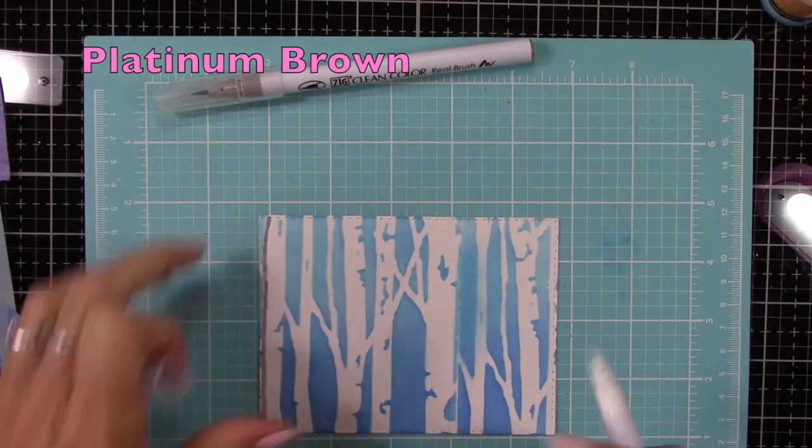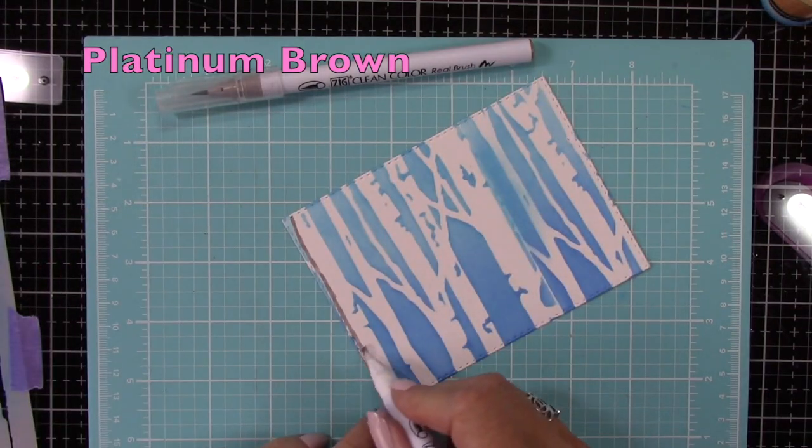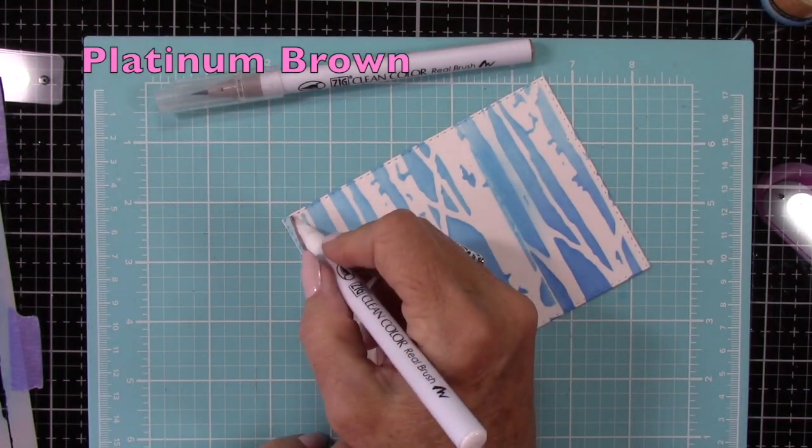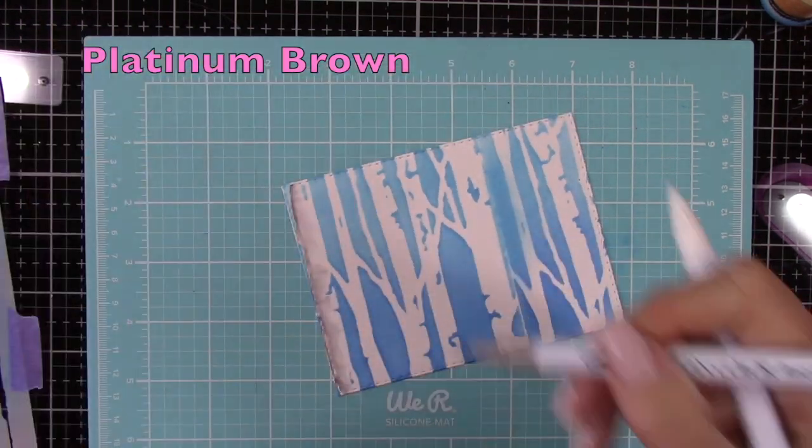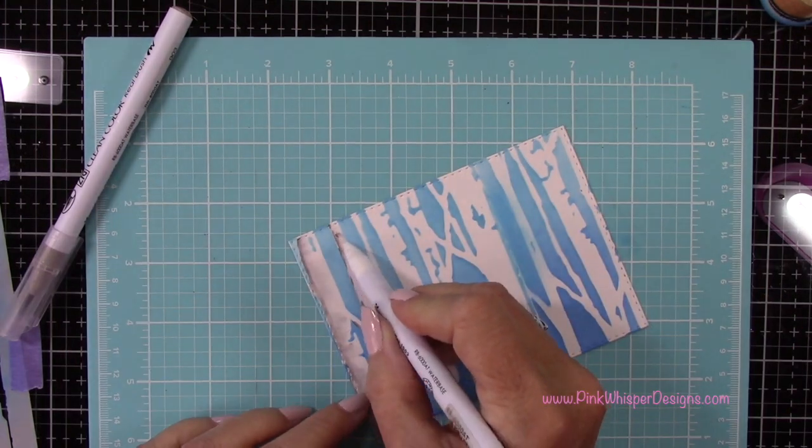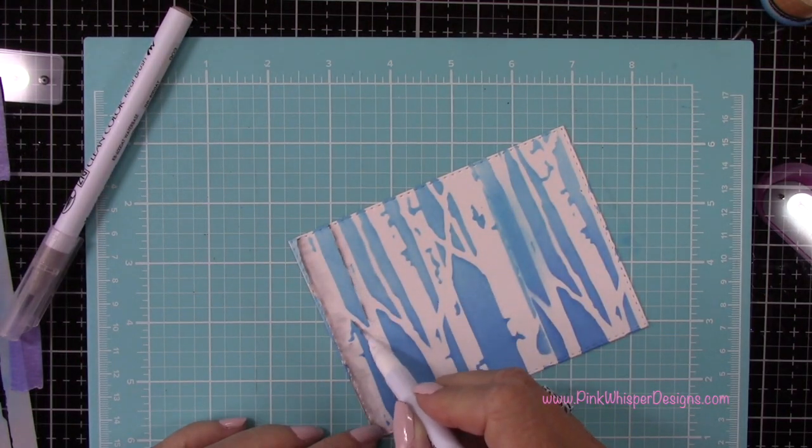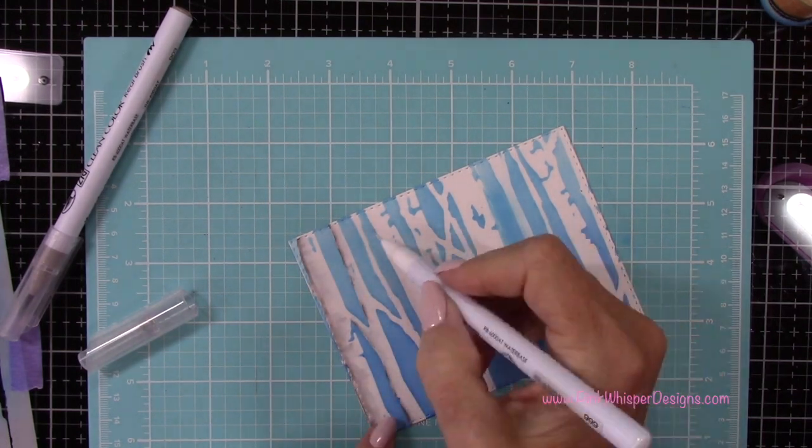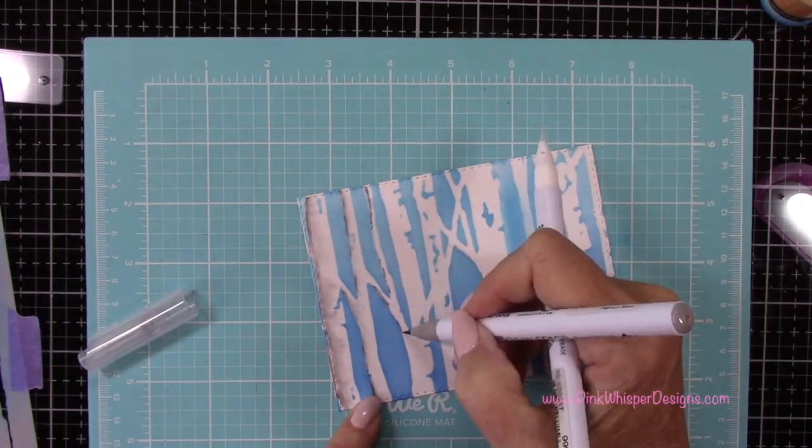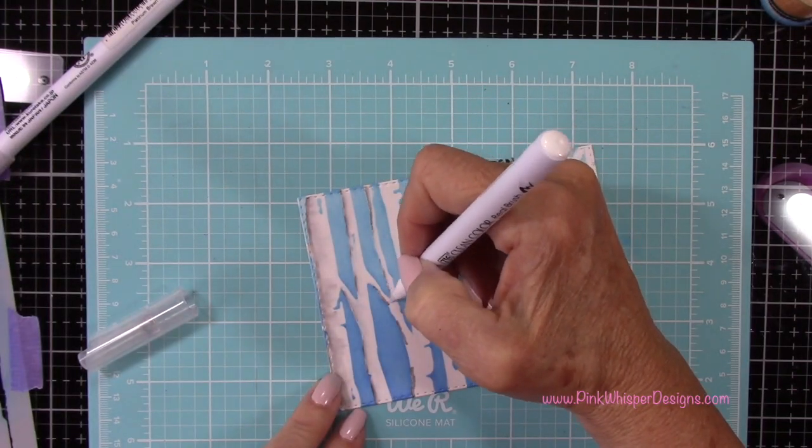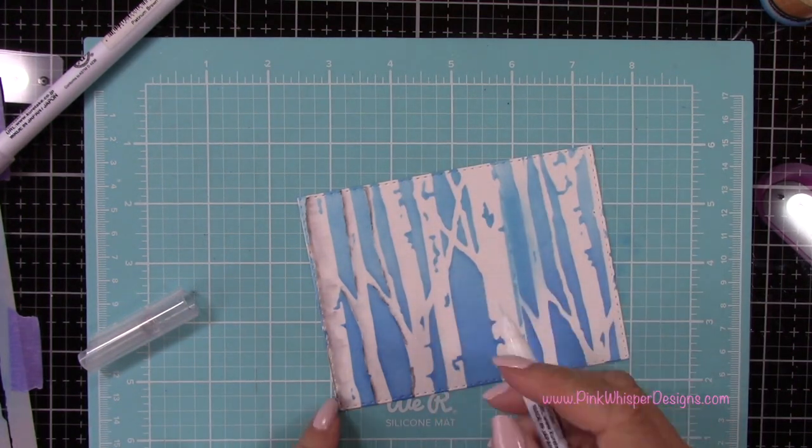So to add a little bit more dimension to these trees I'm using the Platinum Brown Zig Clean Color Real Brush Pen to add some color here. So I'm just going to add a shadow along the left side of each of these trees and then along the bottom of each of the branches. And then what I'll do is just pull that color over using the Zig Blender Pen. Now you could use a water brush here as well because these are water-based pens. But I find that I have a little more control with the Blender Pen.